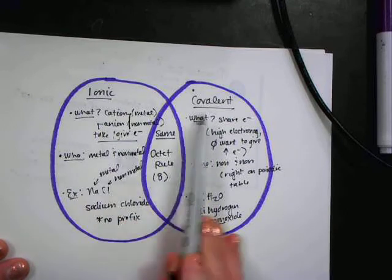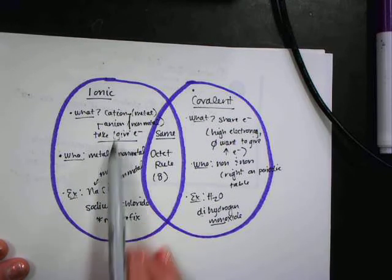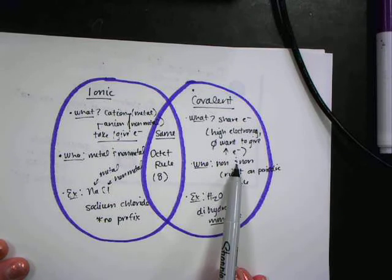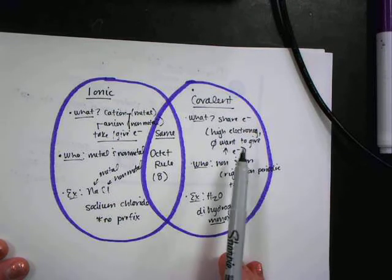Okay, so this is ionic versus covalent. Remember, ionic is a metal and a non-metal. Electrons are taken and given. Covalent are two non-metals, and electrons are shared.